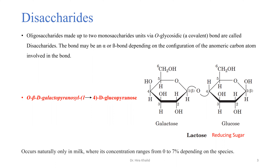Chemically, the glycosidic bond is covalent in nature. The bond may be alpha or beta depending on the configuration of the anomeric carbon atom involved. I suggest reviewing the previous lectures — part two and part three — where we discussed alpha and beta configuration, the anomeric carbon, and the hemiacetal and hemiketal formation in Haworth projections.